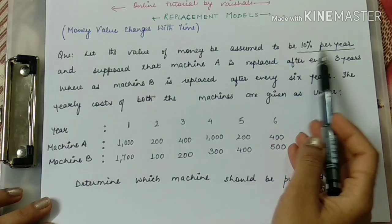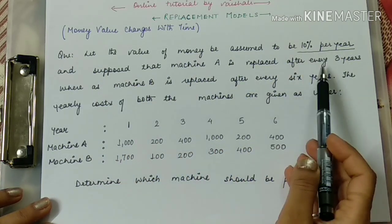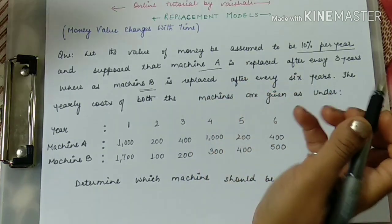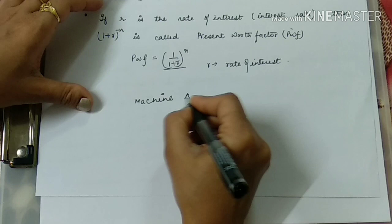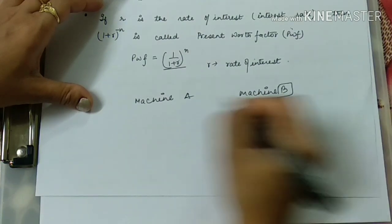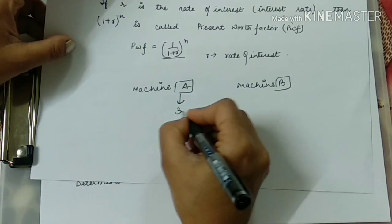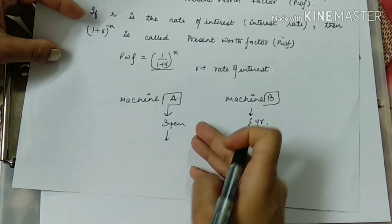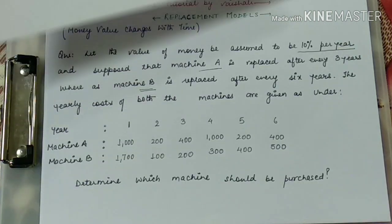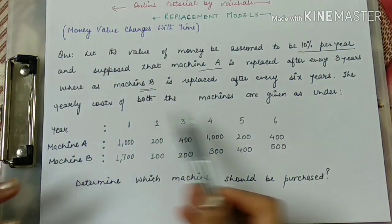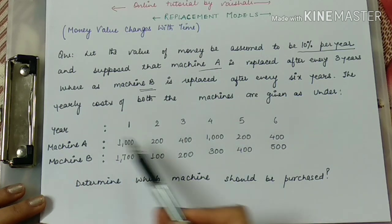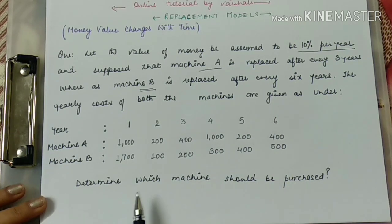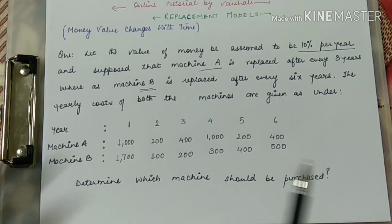The question says: let the value of money be 10% per year, and suppose machine A is replaced after every three years and machine B is replaced after every six years. Yearly costs of both machines are given — the cost of machine A decreases then increases. We have to determine which machine should be purchased.